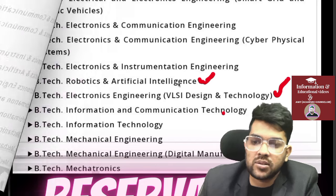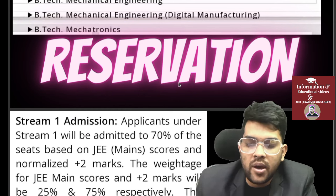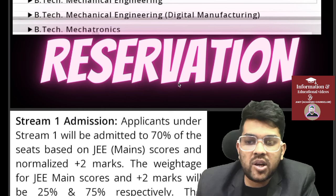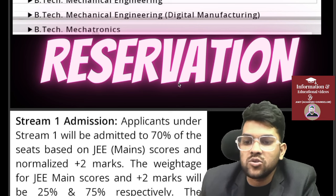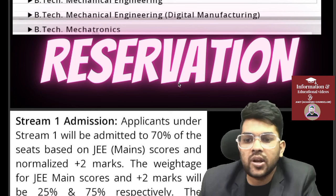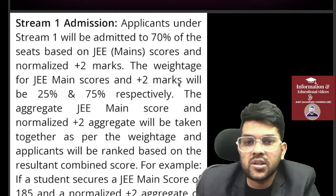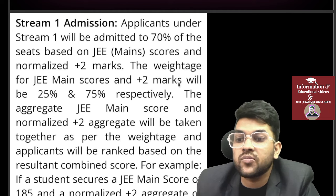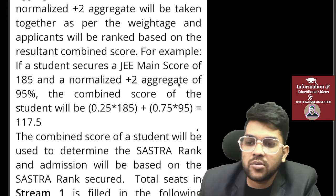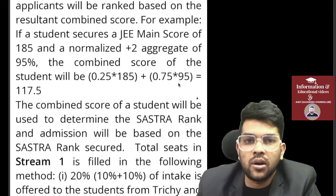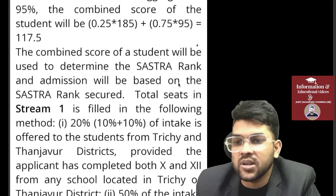Now regarding reservation: there are two types of admission — Stream 1 and Stream 2. Stream 1 has 70% of seats and is based on JEE Mains plus board results. The weightage is 25% JEE Mains and 75% board (Class 12). So if your board result is good, that carries more weight. They calculate a final score, assign a merit rank, and based on that merit rank you get the college through the counseling process.